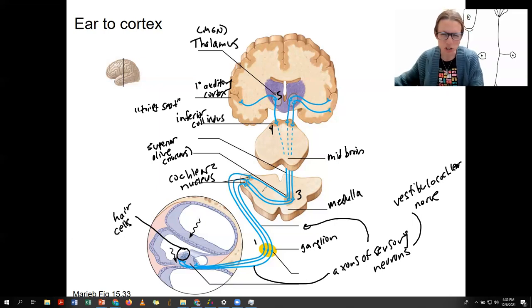One more thing here. You can see the information goes from the cochlear nucleus. There's actually one on each side and it actually crosses. This is the first place, the superior olive, where inputs from both ears come together. So you can actually converge information from both ears.